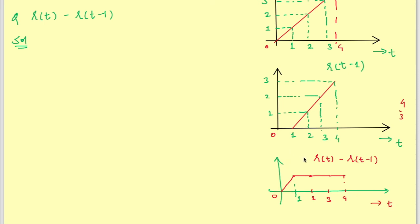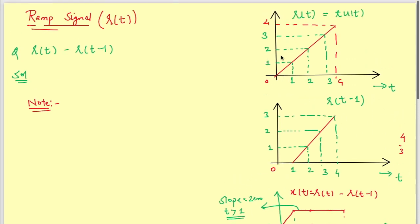An important point to note: when the slopes of two signals become equal and opposite, the net slope is 0 and the resultant signal becomes a constant. The slope of r(t) is 1 for t greater than 0, and similarly for r(t-1) starting at t=1, so the net slope is 0 from t greater than or equal to 1.